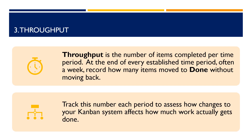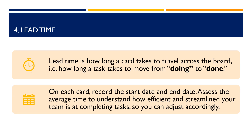Throughput is the number of items completed per time period. At the end of every established time period, often a week, record how many items moved to done without moving back. Track this number each period to assess how changes to your Kanban system affect how much work actually gets done. Lead time is how long a card takes to travel across the board — how long a task takes to move from doing to done. On each card, record the start date and end date, and assess the average time to understand how efficient and streamlined your team is at completing tasks so you can adjust accordingly.